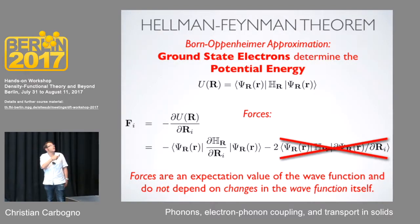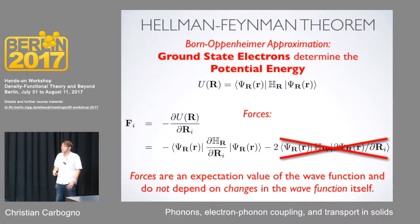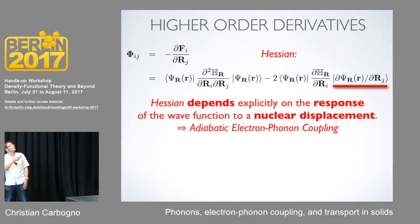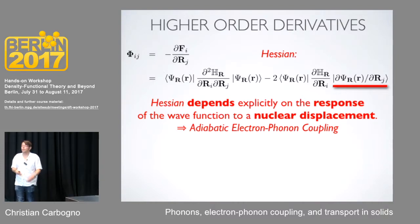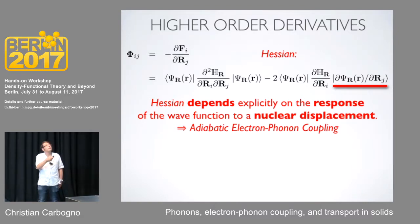For calculating the forces, the only thing we need is the ground state wave function or density, but not its change under a nuclear displacement. This is what you already get from a ground state calculation. If you go to a Hessian, however, you get two terms: one involving the second-order derivative of the Hamiltonian — easy to compute from the ground state — but then an additional term involving the response or the derivative of the wave function. This is a quantity that needs additional treatment and is not trivially extracted from a simple ground state calculation.